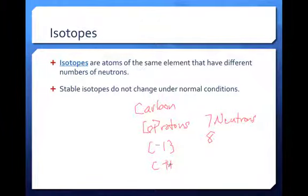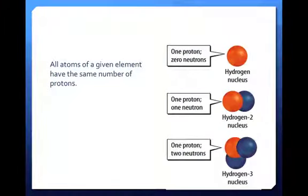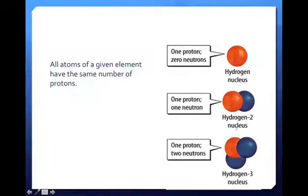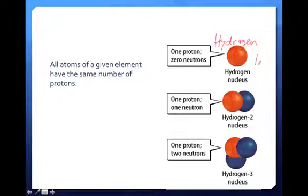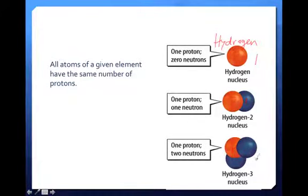Stable isotopes don't change under normal conditions, but there are such things as unstable isotopes. This image shows what we just talked about: all atoms of a specific element will always have the same number of protons. These are all hydrogen — the orange dot represents the proton. They all have one proton, so that means you have hydrogen. This one has no neutrons, so it has an atomic mass of one. Hydrogen-2 has an atomic mass of two because it has one neutron. The last one has one proton and two neutrons, giving it an atomic mass of three — hydrogen-3.